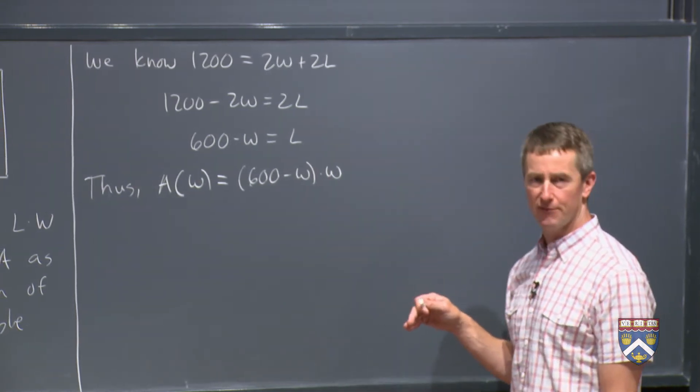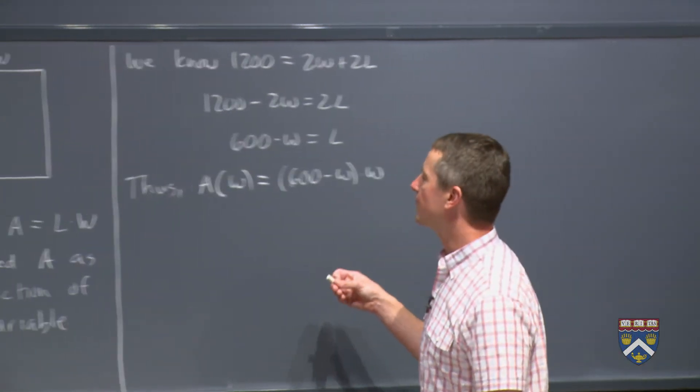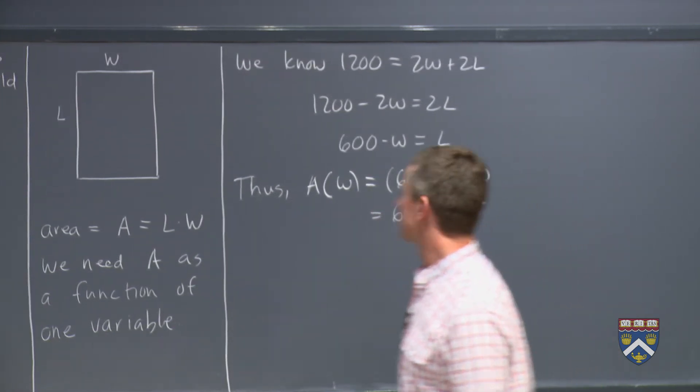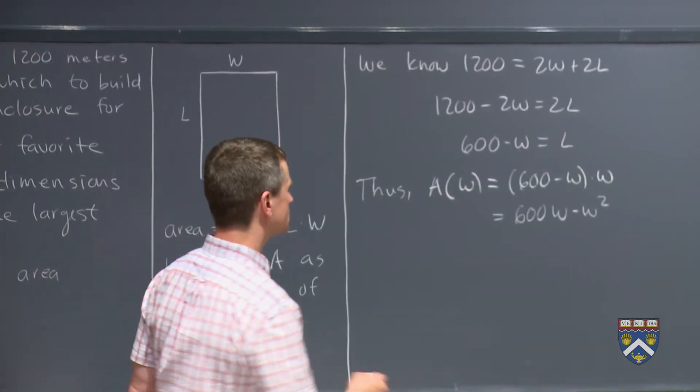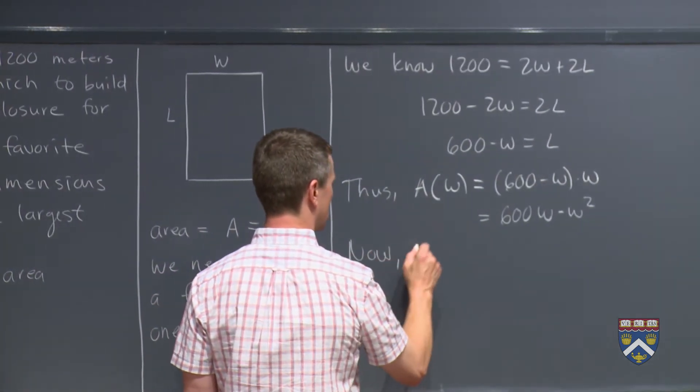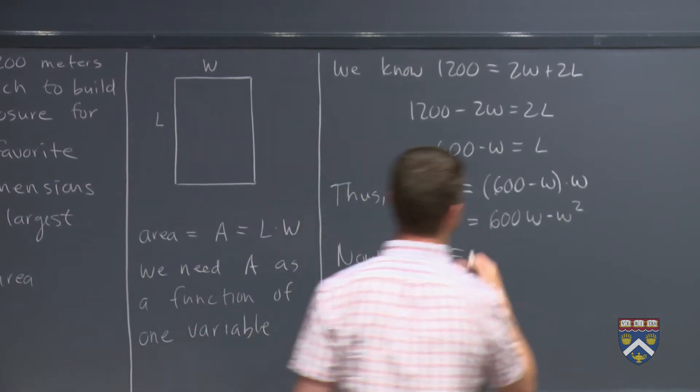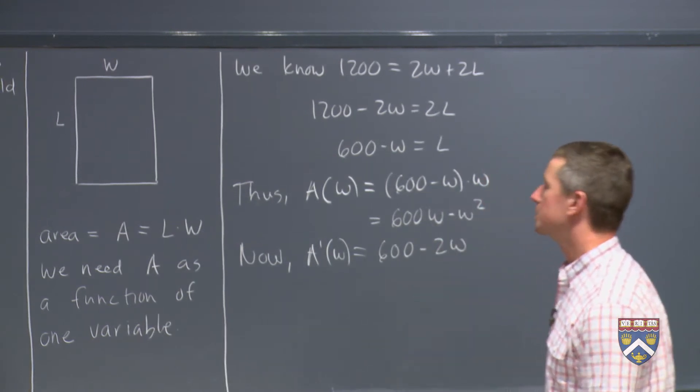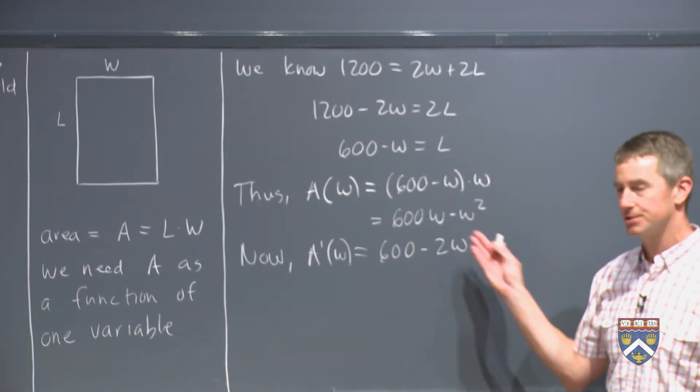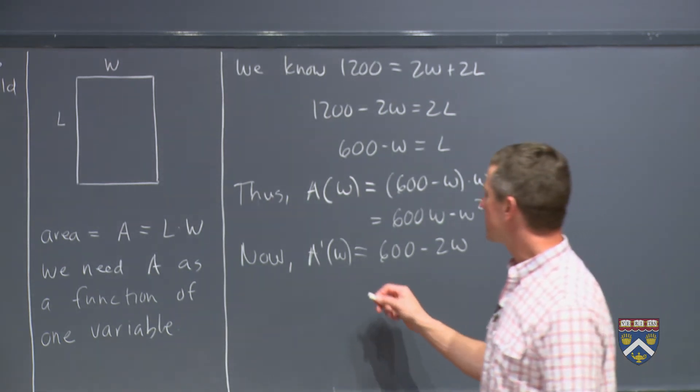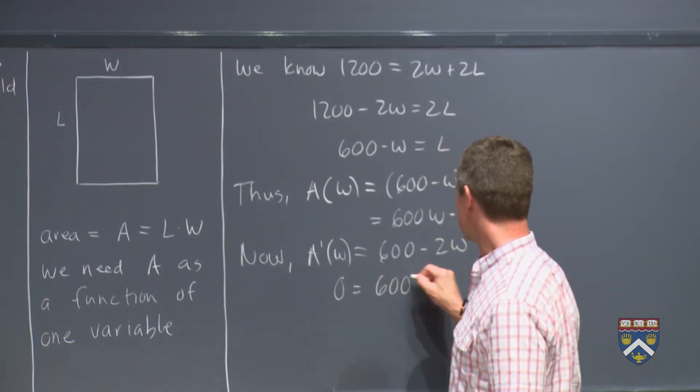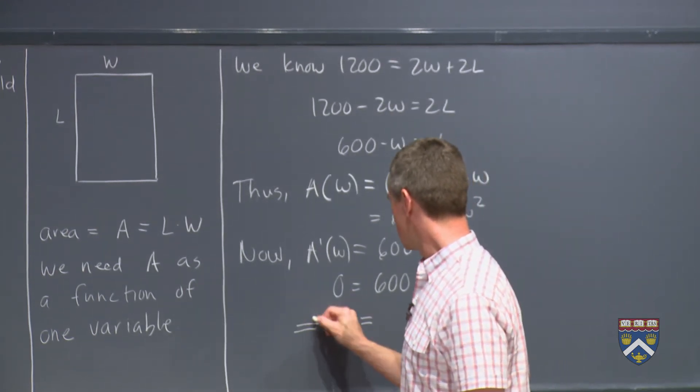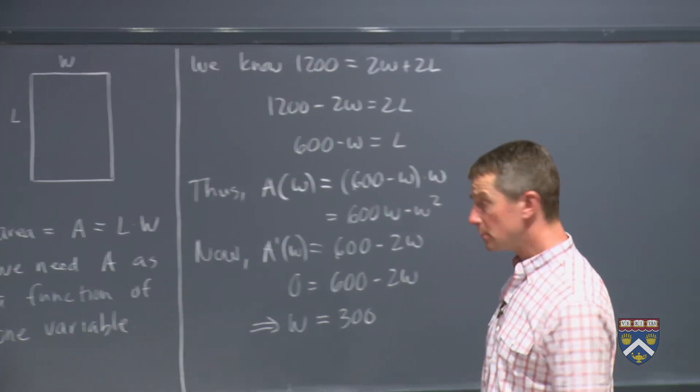As written, if we were going to take the derivative, we'd have to use the product rule, that would be fine, but we can save ourselves the trouble of that by multiplying out here, 600W minus W squared. So now we can take A prime. Just using our normal derivative rules, we get 600 minus 2W. We should ask ourselves, can this ever be undefined? It can't because this is just a linear function. So all that remains is to set this equal to 0, 600 minus 2W. And if we solve, we'll get W equals 300, which might be what you guessed.